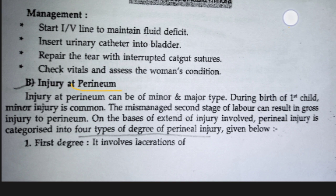Injury in the perineum — the area between the vagina and the anus. Generally, episiotomy is performed here, but even without episiotomy, tearing can occur during delivery due to complications like a baby's head being too large or the baby being in malposition, or when forceps are used.